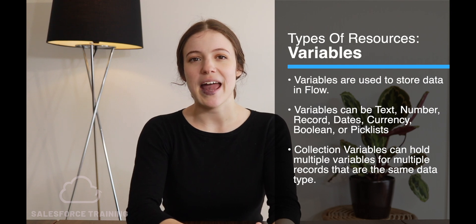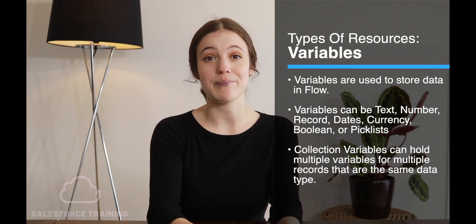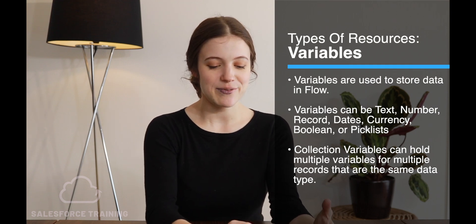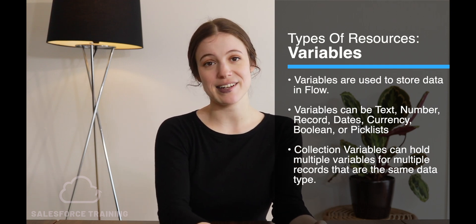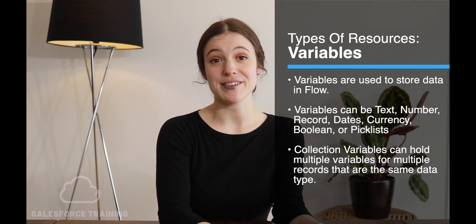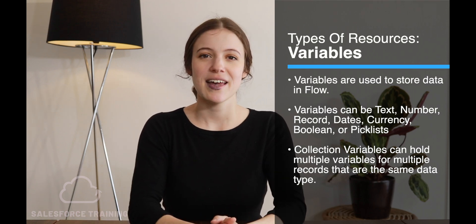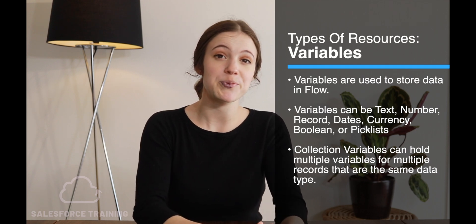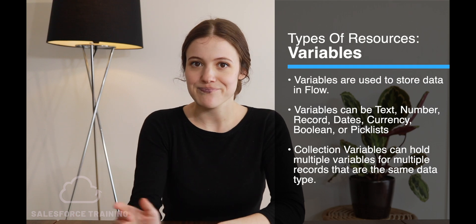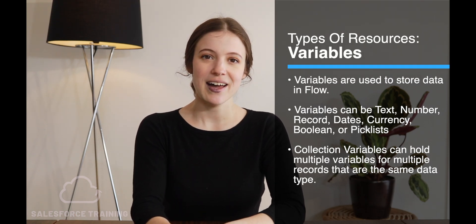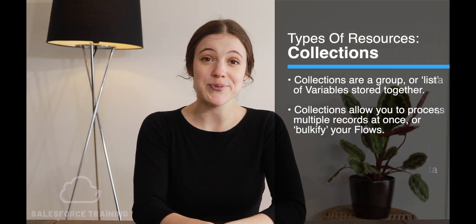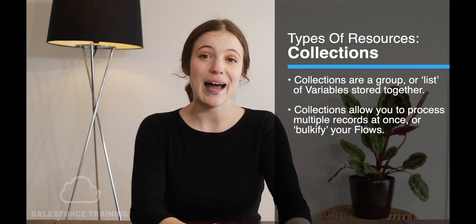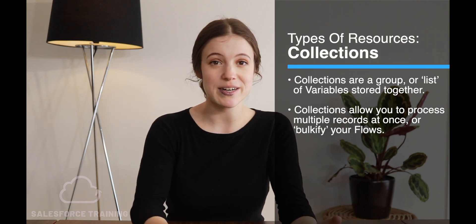If you want a collection where you have different variable types within it — say boolean, text, and currency — you can use the data type Record. This means you can store multiple field values for one record in a collection. Collections are groups or lists of variables stored together, and they're really useful because they allow us to process multiple records at once.